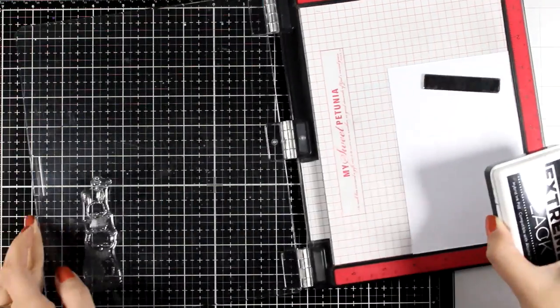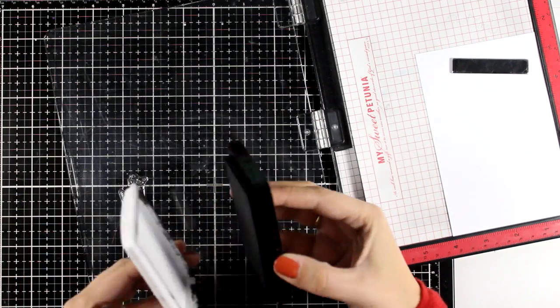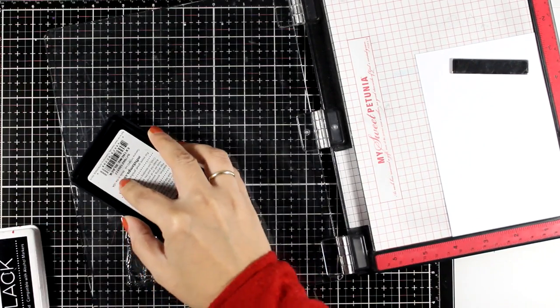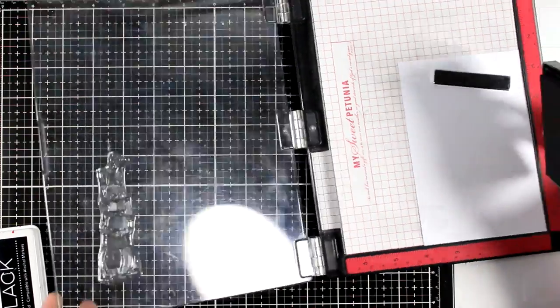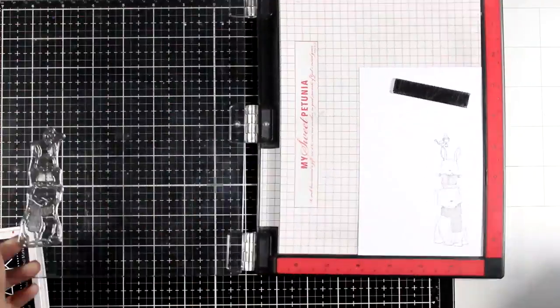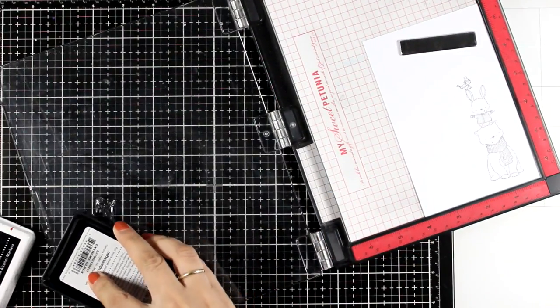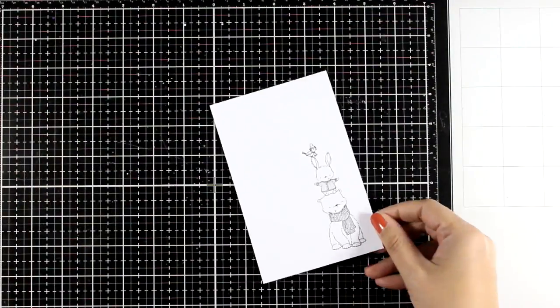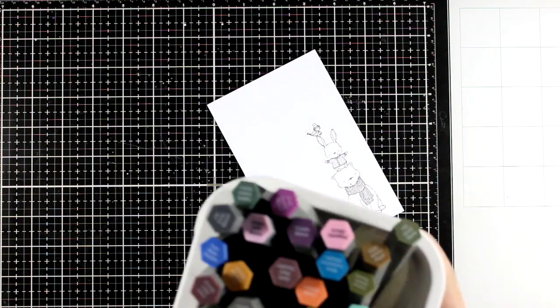So I'm using my Misty to do the stamping and I'm using the Extreme Black Ink by My Favorite Things. This is perfect if you plan to use alcohol markers to color your images. I'm going to stamp it a couple of times to get a good impression.